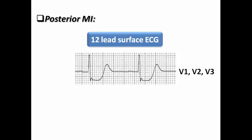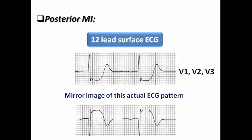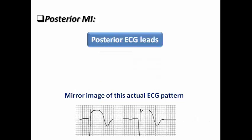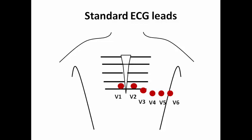On the 12-lead surface ECG, the tall R wave and ST depression in the right precordial leads represent a mirror image of the actual ECG pattern. The original pattern — ST elevation with pathological Q — appears in the posterior ECG leads, since the current of injury is directed toward the back. That's why we need to perform posterior ECG leads: they show ST elevation, pathological Q, and T wave inversion as the upright image of what is reversed in the precordial leads.